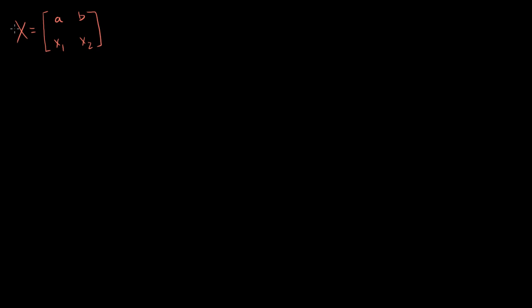Now let's say I have another matrix. Let's say matrix Y is identical to matrix X except for the second row. So matrix Y is A, B on the first row, and Y1, Y2 on the second row.